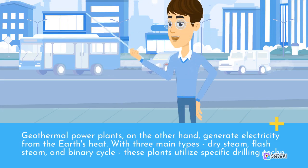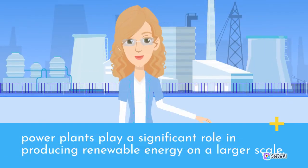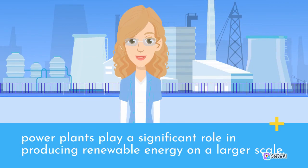Geothermal power plants, on the other hand, generate electricity from the Earth's heat. With three main types—dry steam, flash steam, and binary cycle—these plants utilize specific drilling techniques to access geothermal reservoirs. Vertical or directional drilling methods are employed, depending on the geological conditions, to tap into reservoirs with temperatures higher than 150 degrees Celsius. These power plants play a significant role in producing renewable energy on a larger scale.